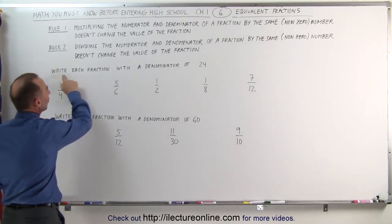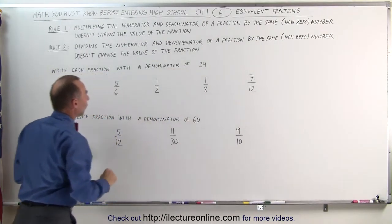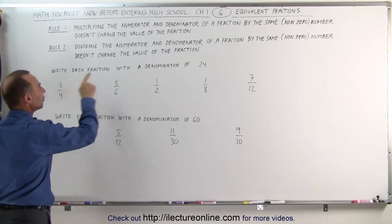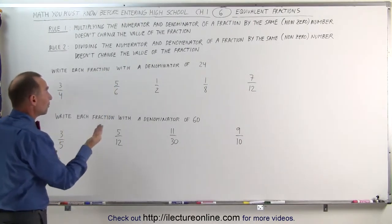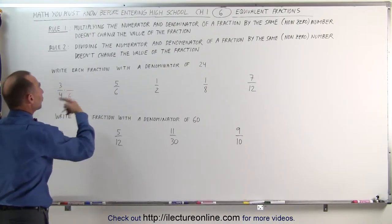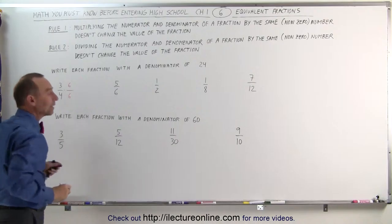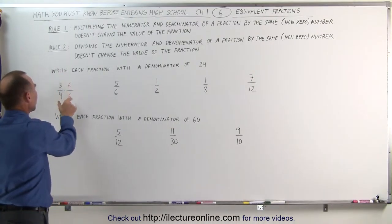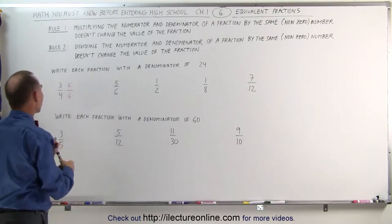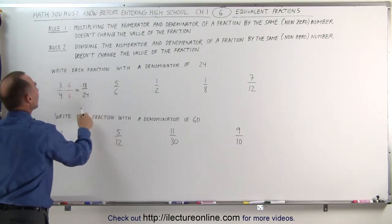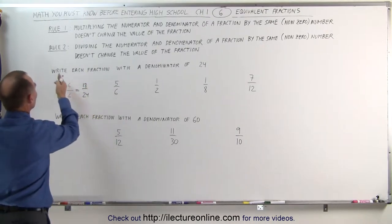In this case, they want us to write each fraction with a denominator of 24. I look at this and say to myself: how many times does 4 fit into 24? 4 fits into 24 six times. So if you multiply the denominator by 6, 4 times 6 gives you 24. But according to the rule, we must multiply the numerator by the same number as well. Multiplying both numerator and denominator by 6, the denominator will be 24 and the numerator will be 18, which means 18 divided by 24 is an equivalent fraction to 3 divided by 4.